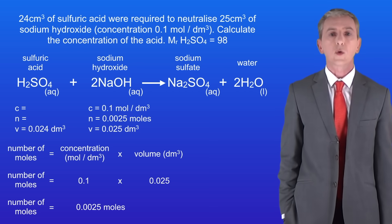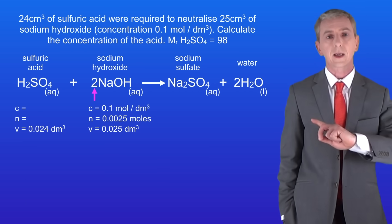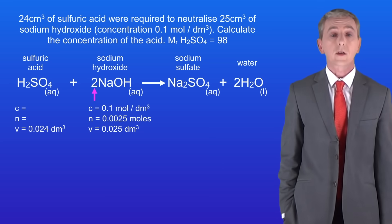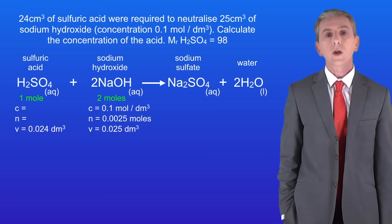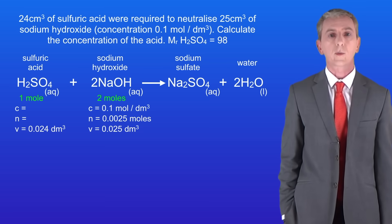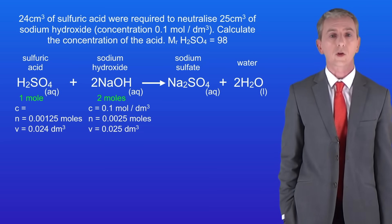Looking at the chemical equation we can see that we've got a large 2 in front of the sodium hydroxide here. This tells us that 2 moles of sodium hydroxide react with 1 mole of sulphuric acid. We've got 0.0025 moles of sodium hydroxide, so we must have 0.00125 moles of sulphuric acid.